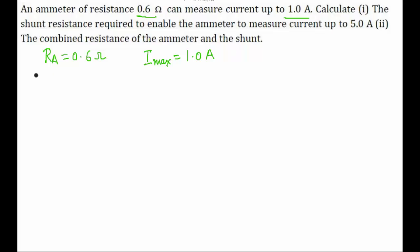Let's assume the shunt resistance to be Rs, so that the ammeter can measure a maximum current of 5 ampere. For this the voltage difference across the ammeter when allowing maximum current of 1 ampere should be equal to the voltage difference of the shunt plus ammeter in parallel which is allowing a maximum current of 5 ampere.